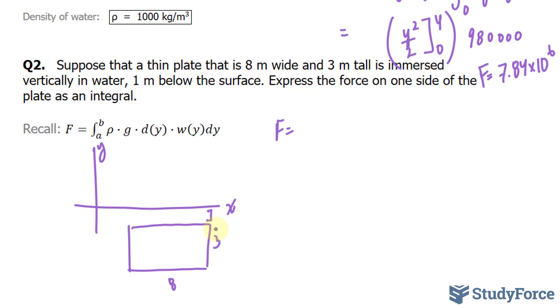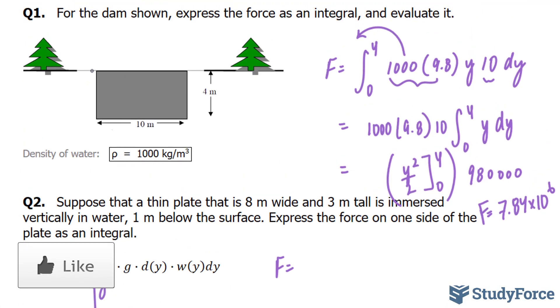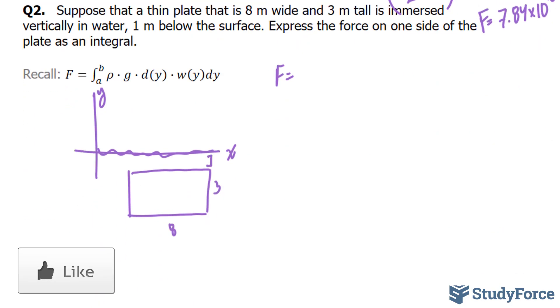So let's continue writing our function. The fact that it's submerged 1 meter below the surface of the water, so pretend that this is water, will change the bounds. So instead of, like before where we had 0 and 4, where it was right at the surface, this time it will be 1 and 4. So the integral between 1 and 4. And keep in mind that y is being measured, positioned downwards. So y is downwards. This is why it's positive 1 and positive 4.